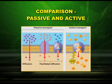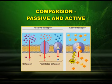Now let us compare passive and active transport. As clearly shown in the diagram: in passive transport, simple diffusion involves no carrier molecules; facilitated diffusion involves carrier proteins. And in active transport, carrier proteins plus ATP are involved.